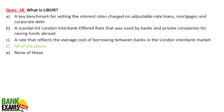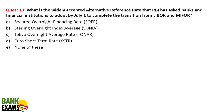What is LIBOR? LIBOR (London Interbank Offered Rate) is a key benchmark for setting interest rates on adjustable rate loans, mortgages, and corporate debt. It is a scandal-hit rate that is now being replaced. What is the widely accepted alternative reference rate that RBI has asked banks and financial institutions to adopt by 1st July to complete the transition from LIBOR? It is SOFR — the Secured Overnight Financing Rate.